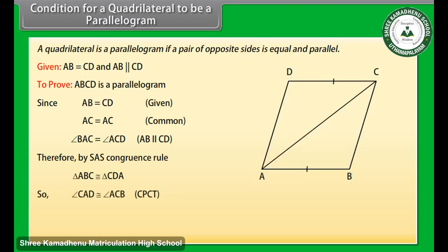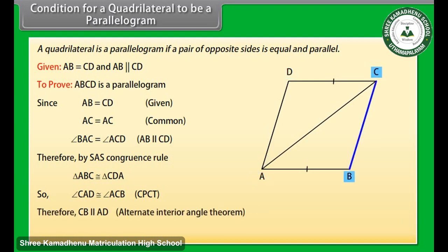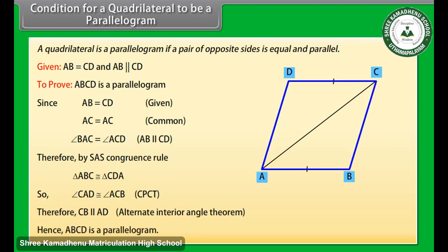So angle CAD is equal to angle ACB — CPCT. Therefore CB is parallel to AD. Hence ABCD is a parallelogram.